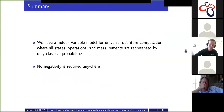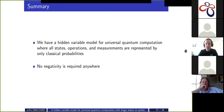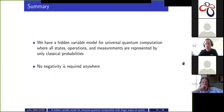To summarize: we have a hidden variable model for universal quantum computation with magic states where all elements of computation — the states, the operations, and the measurements — are represented using only classical probabilities. It's structurally similar to quasi-probability representations, except there's no negativity anywhere.